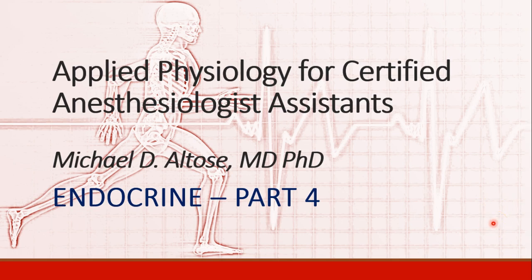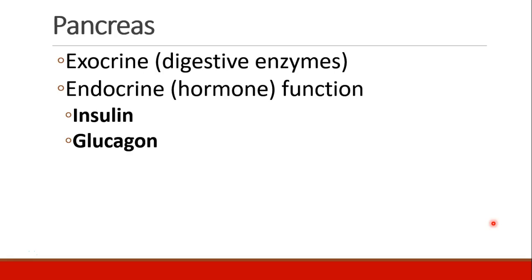Hi, this is Michael Altos. We are continuing our discussion of endocrine physiology. This is recording part four. The pancreas has two distinct functions: exocrine and endocrine. The exocrine function involves secreting digestive enzymes into the digestive system, and the endocrine function, which we'll focus on now, is the hormone function, secreting insulin and glucagon into the circulation.